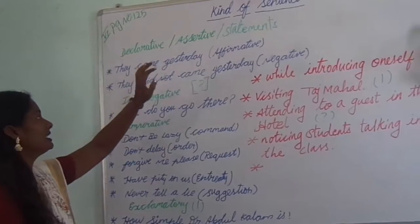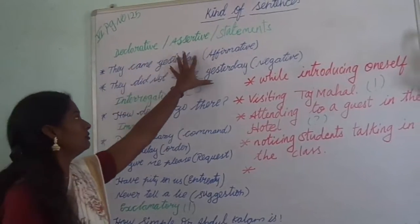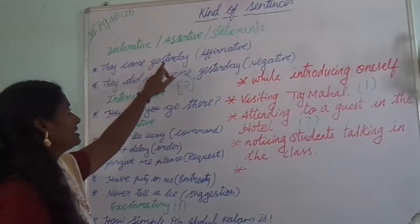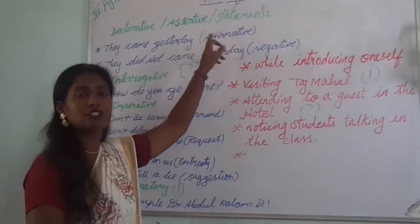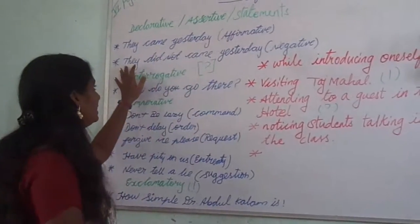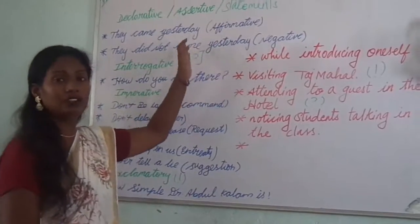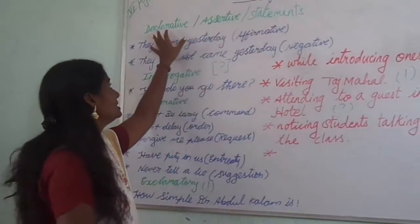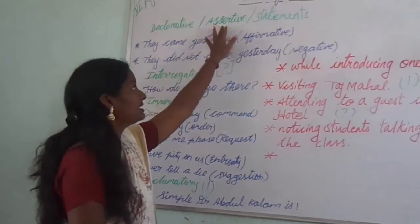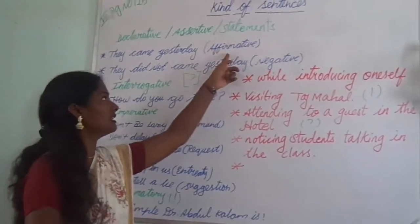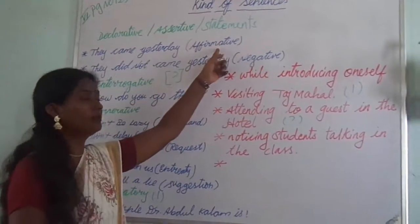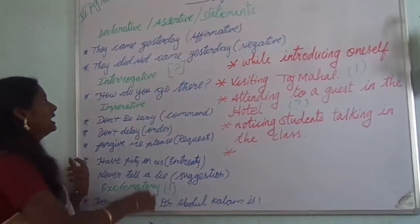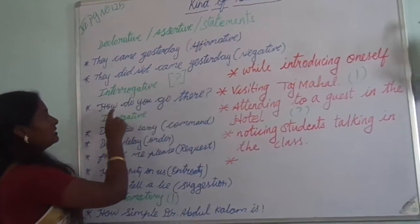For declarative, assertive, or statement, we have two types — whether it is a negative or positive sentence. 'They came yesterday' is called affirmative because it is a positive statement. And 'They did not come yesterday' is a negative statement, so it is called negative. So in declarative, assertive, or statement, we have two types: affirmative and negative.